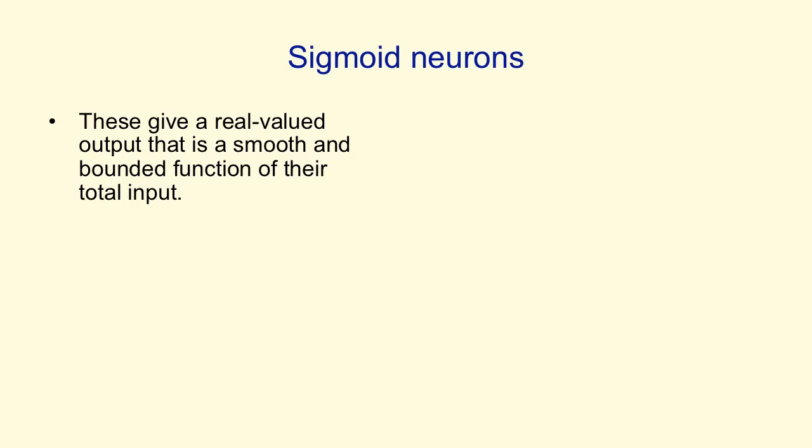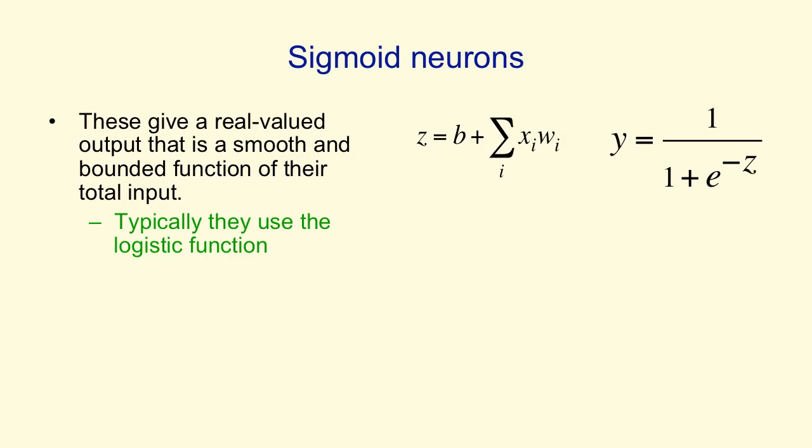The neurons that we'll use a lot in this course, and are probably the commonest kinds of neurons to use in artificial neural nets, are sigmoid neurons. They give a real-valued output that is a smooth and bounded function of their total input. It's typical to use the logistic function, where the total input is computed as before, as a bias plus what comes in on the input lines weighted. The output for a logistic neuron is 1 over 1 plus e to the minus the total input.